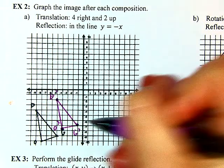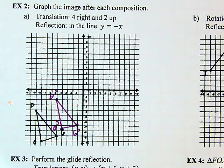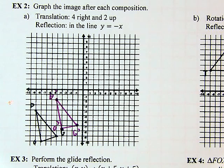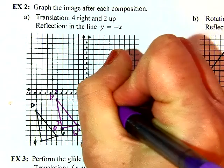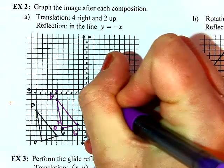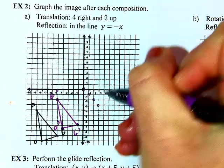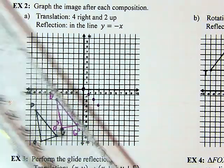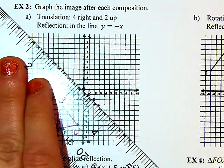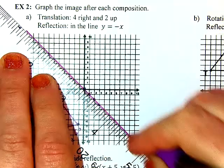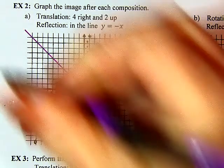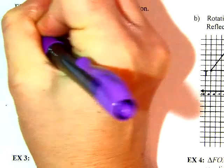Now we move on to the next step: a reflection in the line Y equals negative X. So it reflects over Y equals negative X — slope is negative one, Y-intercept is the origin. Starting at the origin, going down one and right one for the slope, I connect the dots to draw that line Y equals negative X.